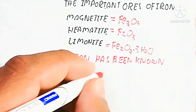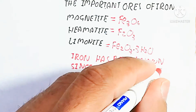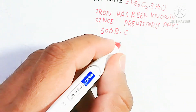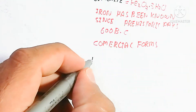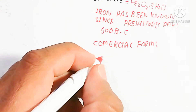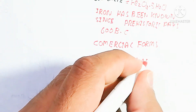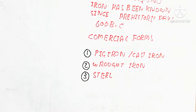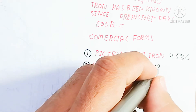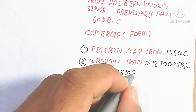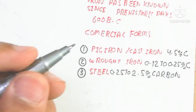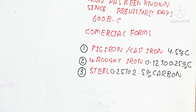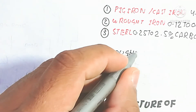The commercial forms of iron are classified on the basis of impurity and quality. Iron has been known since prehistoric days, around 600 BC. The commercial forms include pig iron or cast iron, which contains 4.5% carbon; white iron, which contains 0.12 to 0.25% carbon; and steel, which contains 0.25 to 2.5% carbon. Steel is considered the best type because it contains less carbon, and white iron is better compared to pig iron.